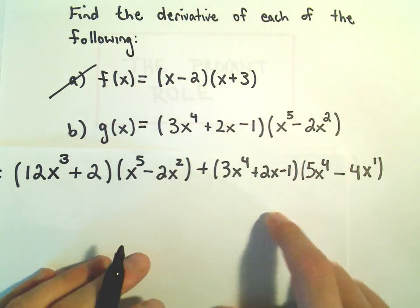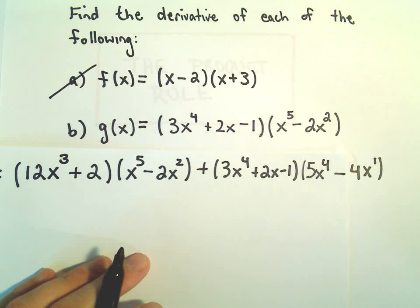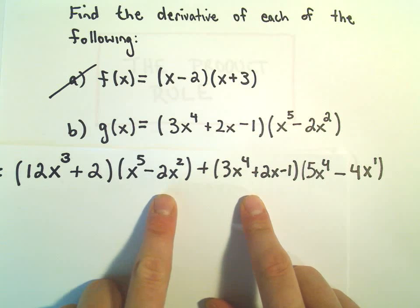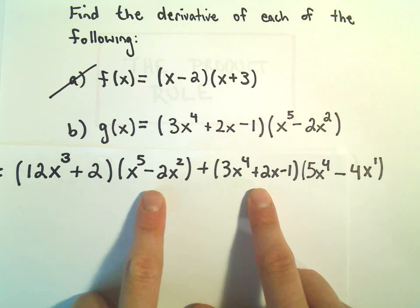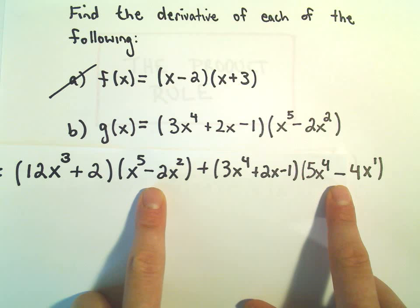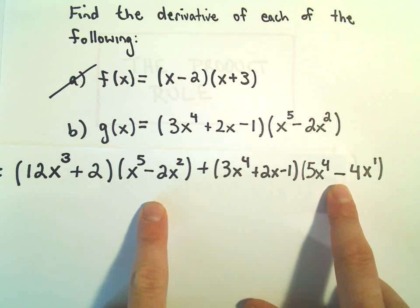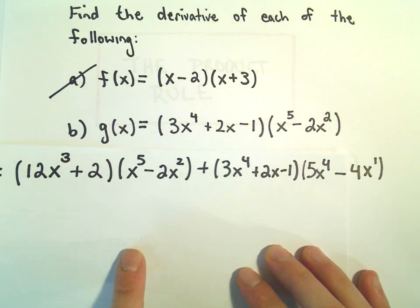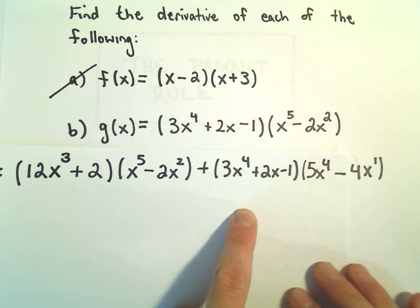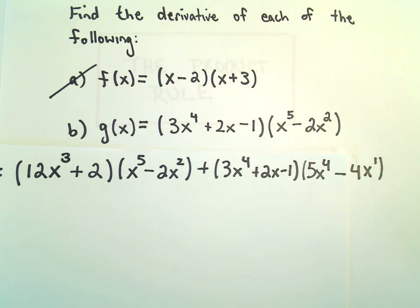And now, we could always clean this up a little bit. Probably what I usually start looking for at this point are common factors. Notice there's not really the same thing inside the parentheses on any of these. So I think probably what I would do in this case is just leave this one alone, and that's our derivative. You could always multiply all this stuff back out, collect all your like terms. But again, just to illustrate the product rule, I think I'm going to leave it there.